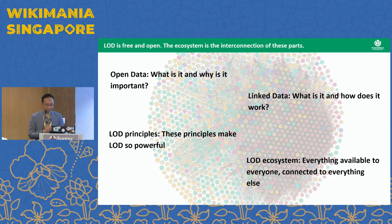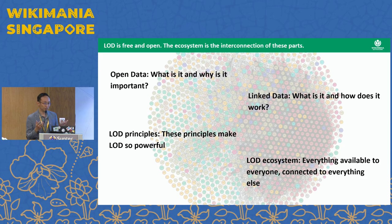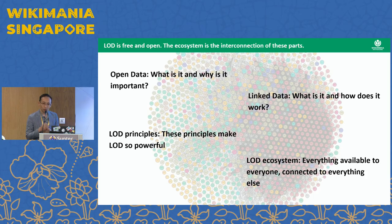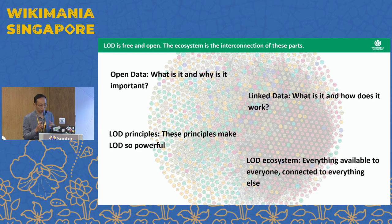So we have open data, we have linked data. What is linked open data? It's the next level. Having open data initiatives where the data is not linked to one another is not necessarily very effective and useful, but it's an important first step. Linked open data is a set of principles for publishing and sharing data on the web in a way that is easy to connect and to use and reuse, linking the data to other datasets to create a web of interconnected information.